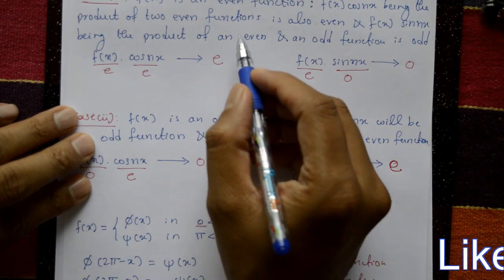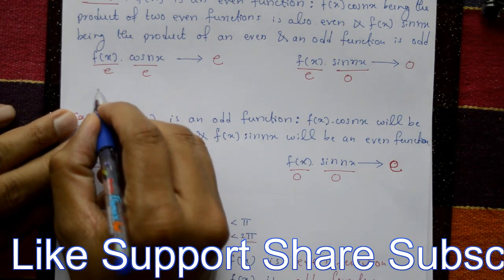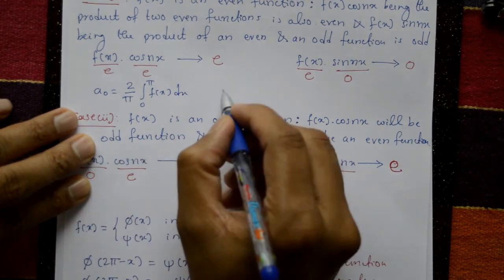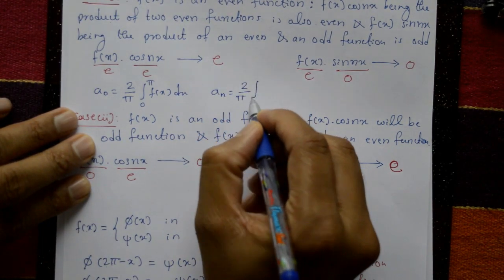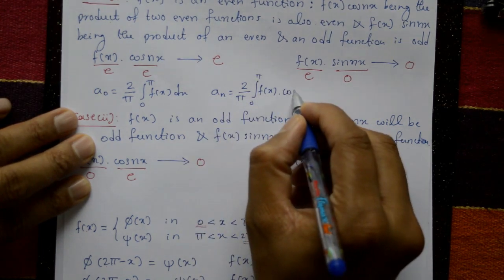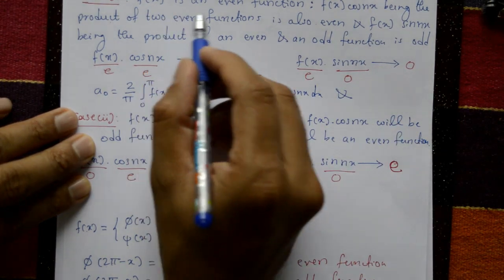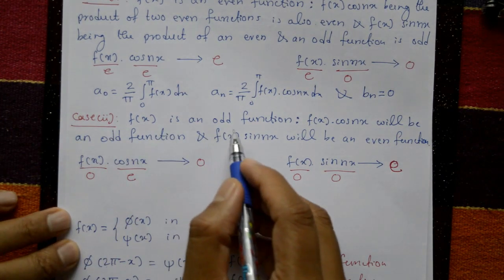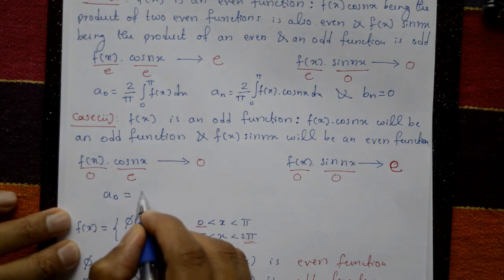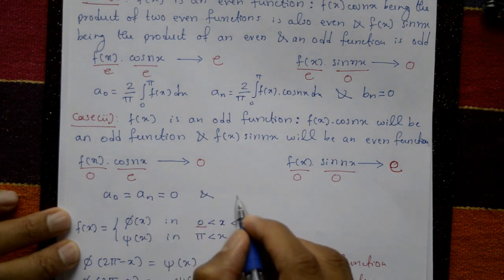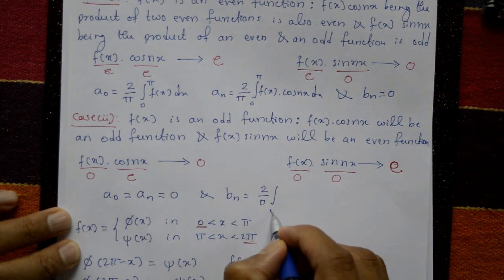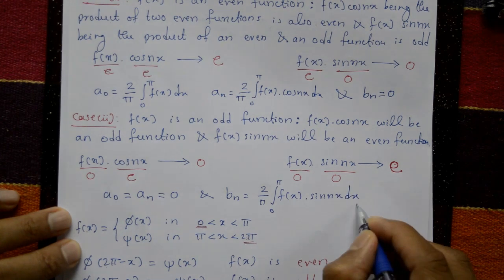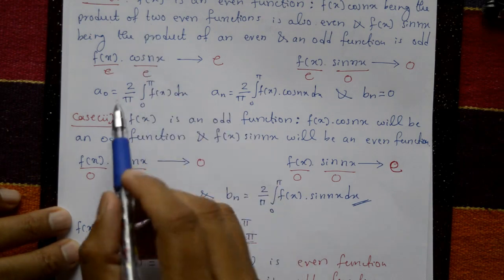If f(x) is an even function, then a₀ = (2/π)∫₀^π f(x) dx, and aₙ = (2/π)∫₀^π f(x)·cos(nx) dx, but bₙ = 0. If f(x) is an odd function, then a₀ = 0 and aₙ = 0; only bₙ is required: bₙ = (2/π)∫₀^π f(x)·sin(nx) dx. For even functions, a₀ and aₙ are required; for odd functions, only bₙ is required.